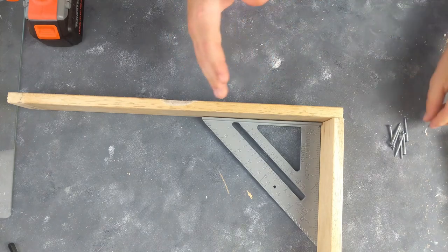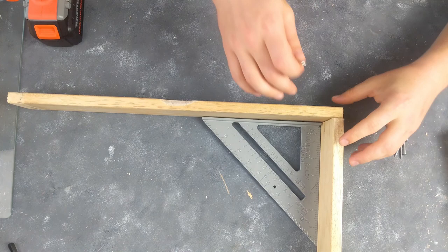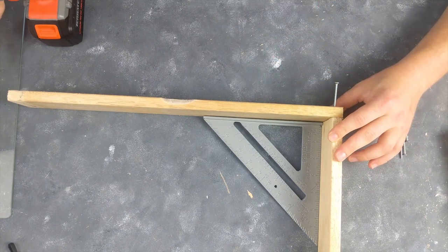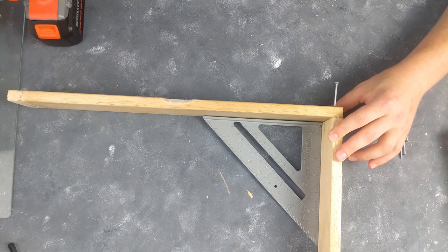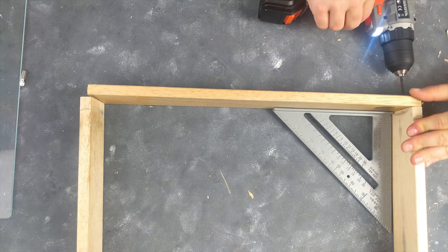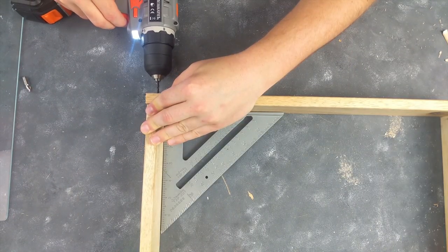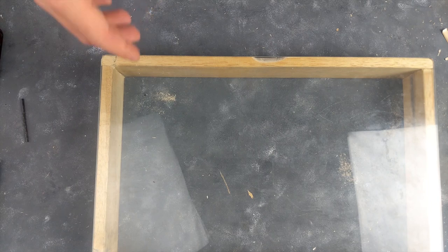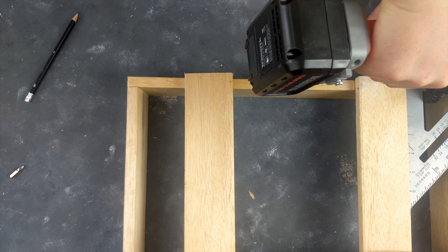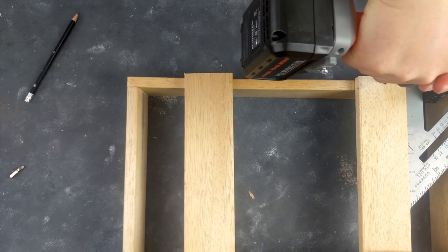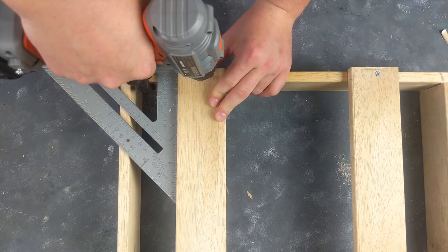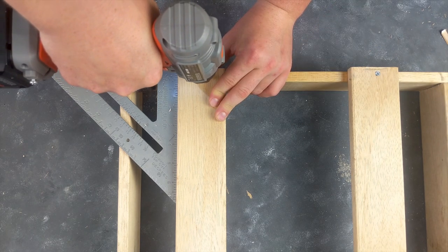We're going to be using screws just to make sure that we have a tight fit and everything stays nicely together for a long time. I'm using the speed square to align everything and make sure that all the pieces of wood are straight because it's very important for them to be perfect so that the tempered glass on top is going to fit nicely. This is up. Now we need to put it upside down and make more holes for those two.